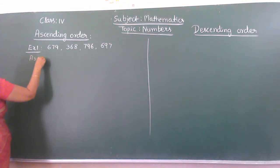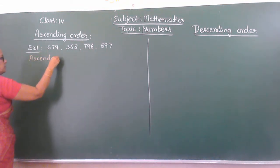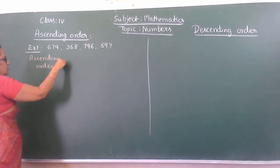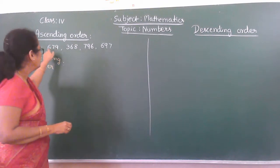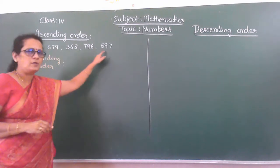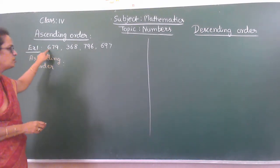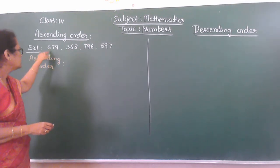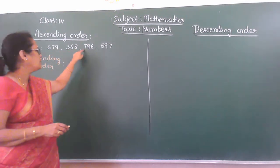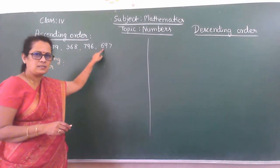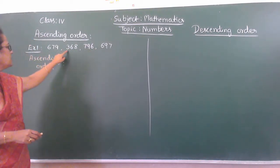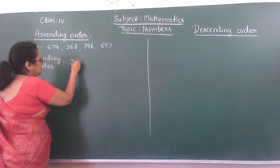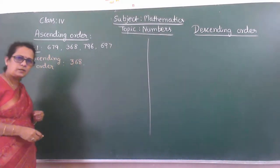Now, which is the smallest one? First go to the place value, that is the hundreds place value: 6, 3, 7, 6. So from this, 3 is the smallest one. So write 368 first.